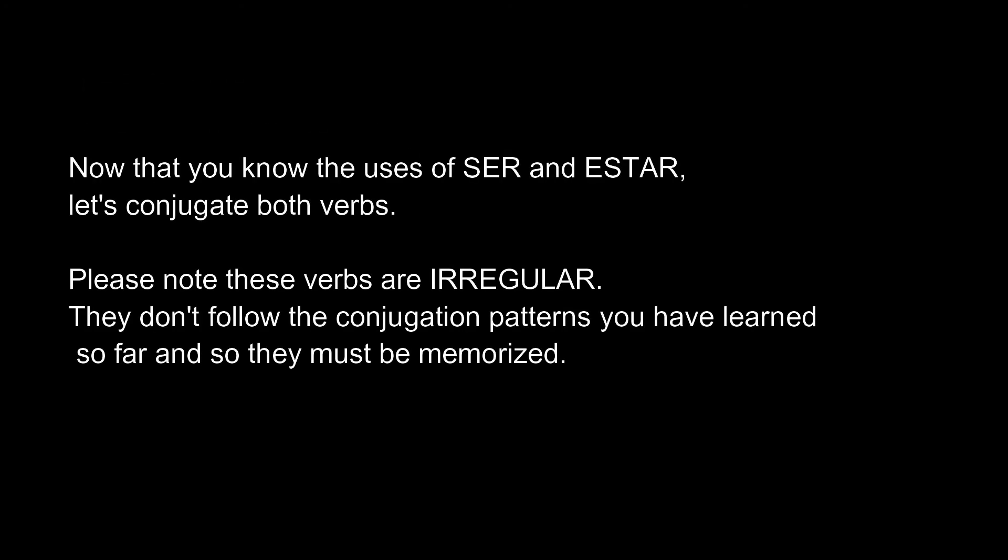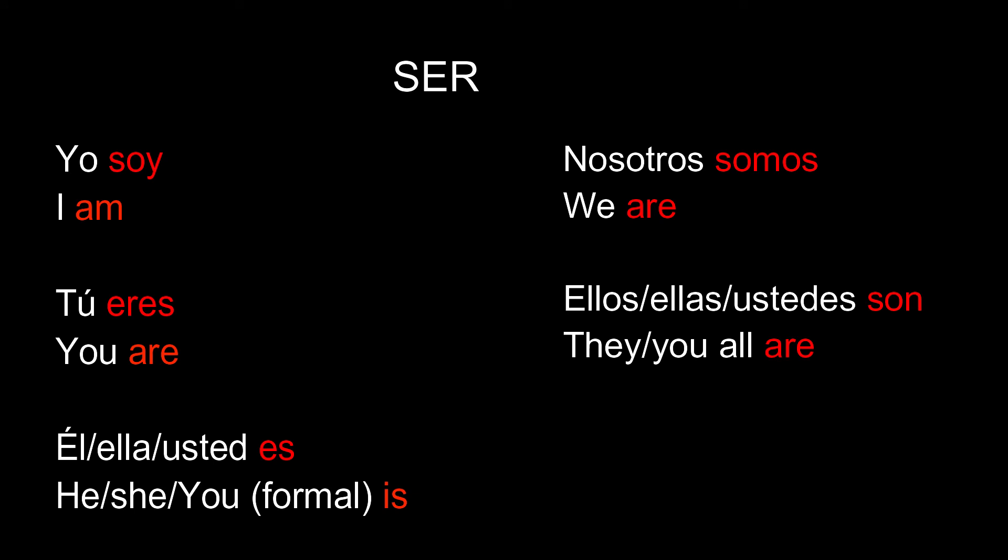Now that you know the uses of ser and estar, let's conjugate both verbs. Please note these verbs are irregular — they don't follow the conjugation patterns you have learned so far, and so they must be memorized. Conjugation of ser: yo soy — I am; tú eres — you are; él, ella, usted es — he, she, you are; nosotros somos — we are; ellos, ellas, ustedes son — they or you all are.